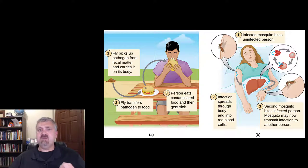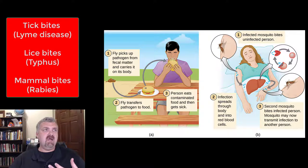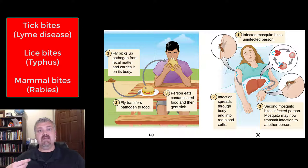So a couple other examples. We already mentioned the malaria being spread by mosquitoes. This would be how tick bites would lead to Lyme disease, how lice biting could lead to typhus. And if you want to think about other types of animals, I already mentioned rabies before, but a mammal can bite you and that would be an example of biological transmission of the rabies virus through their saliva.